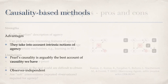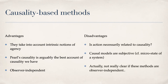All in all, causality-based methods take into account an intrinsic notion of agency, consider Pearl causality in some cases — which I think is a great strength — and are generally observer-independent or try to be. However, causal models are in the end still somewhat subjective: in Pearl's reading of causality we still need to write down which variables we are interested in and say how they map to the real world.